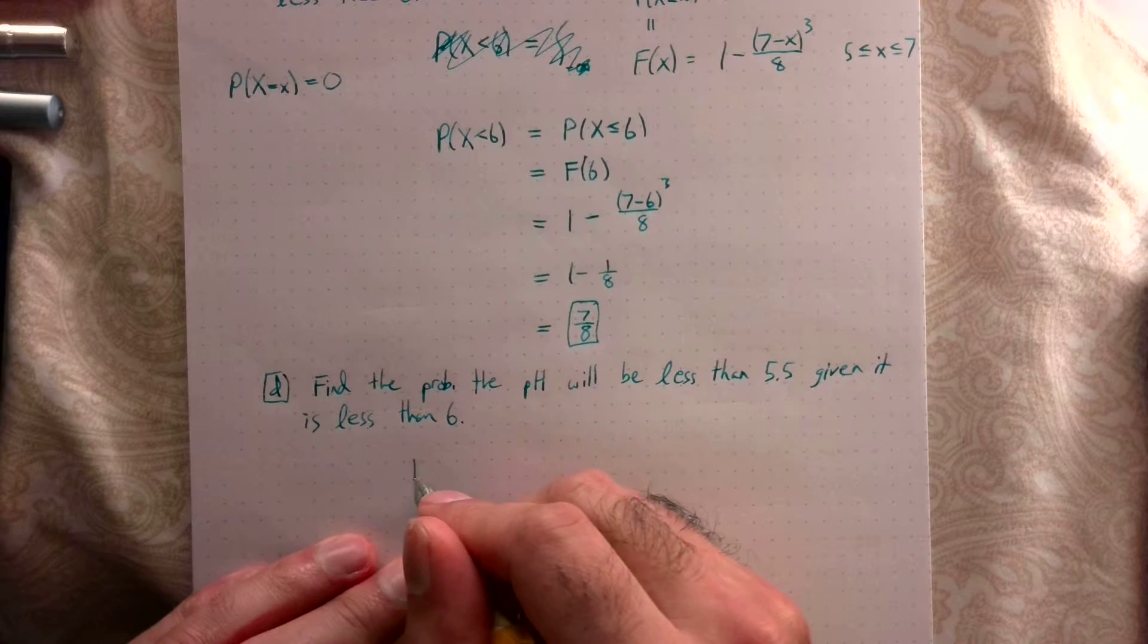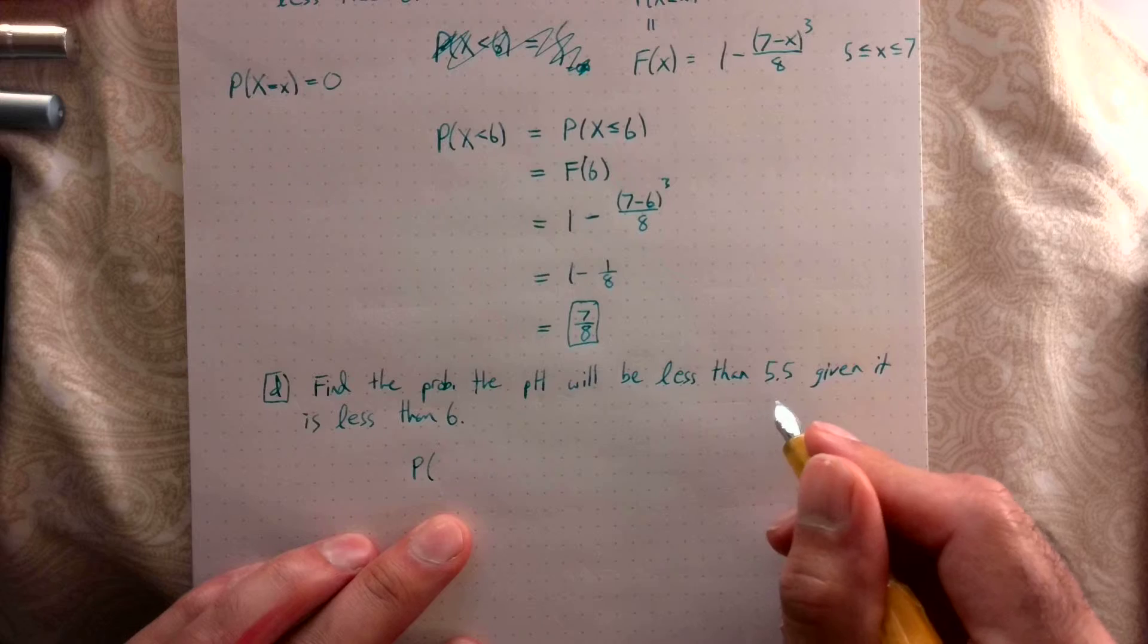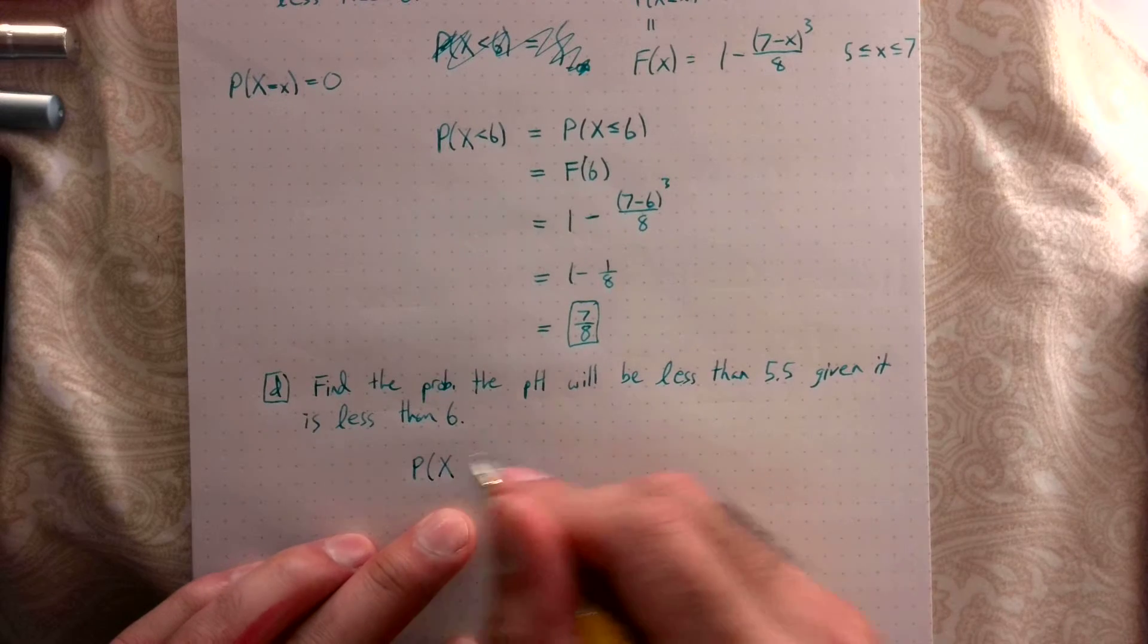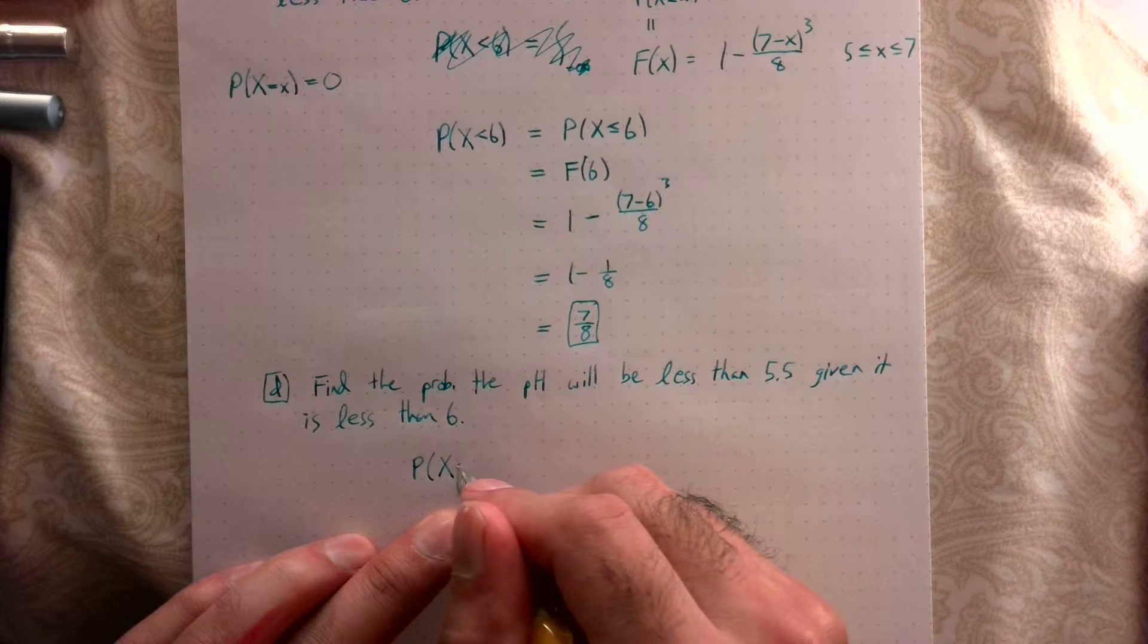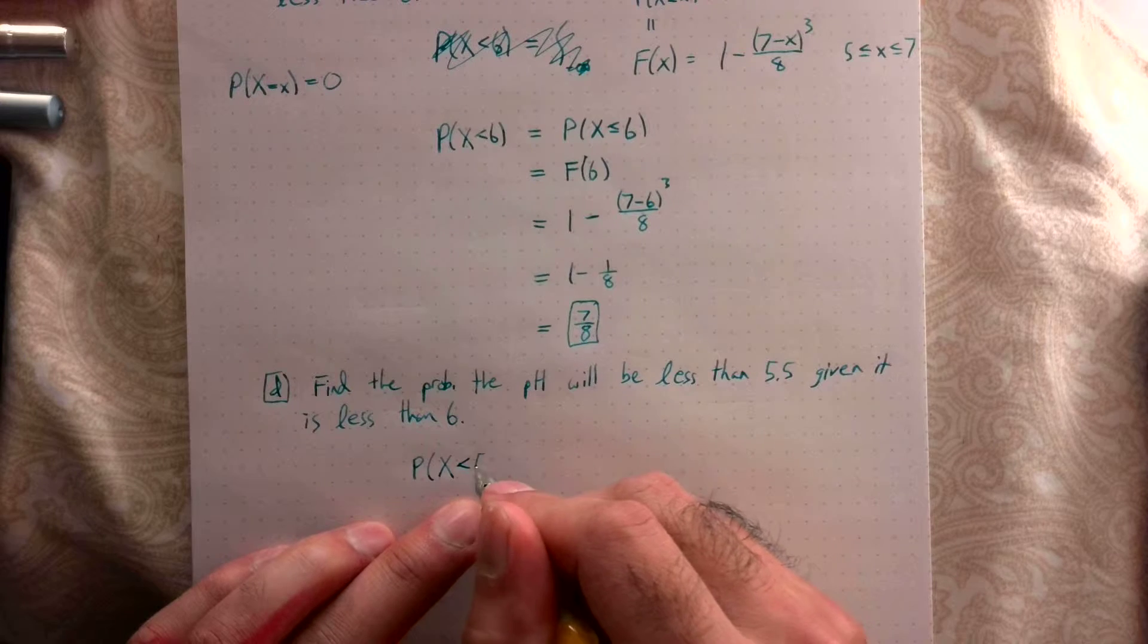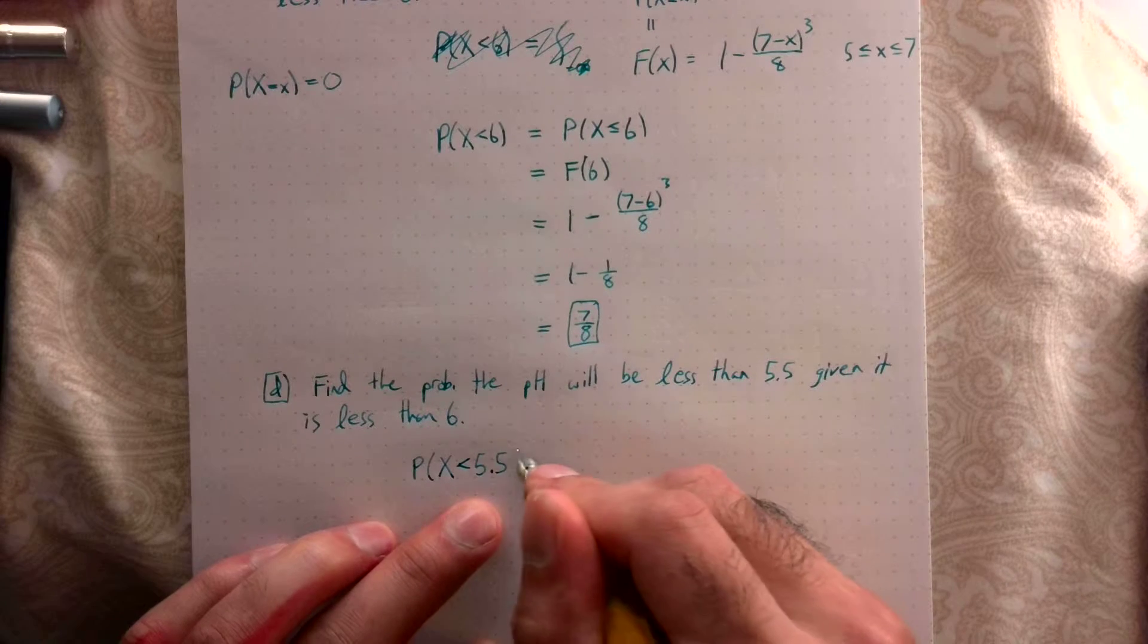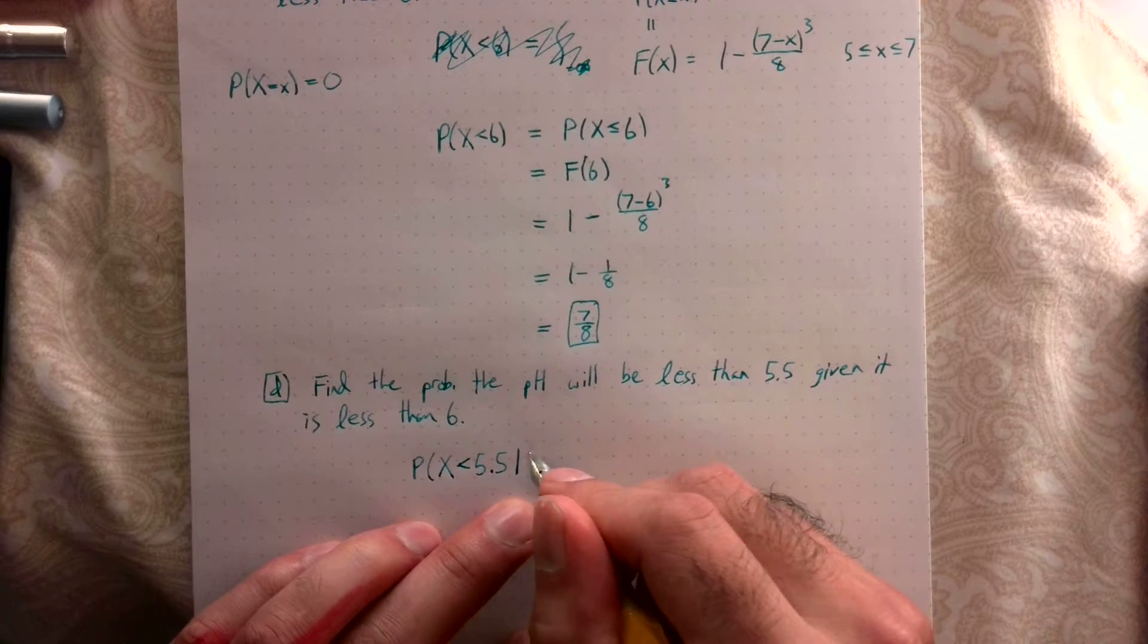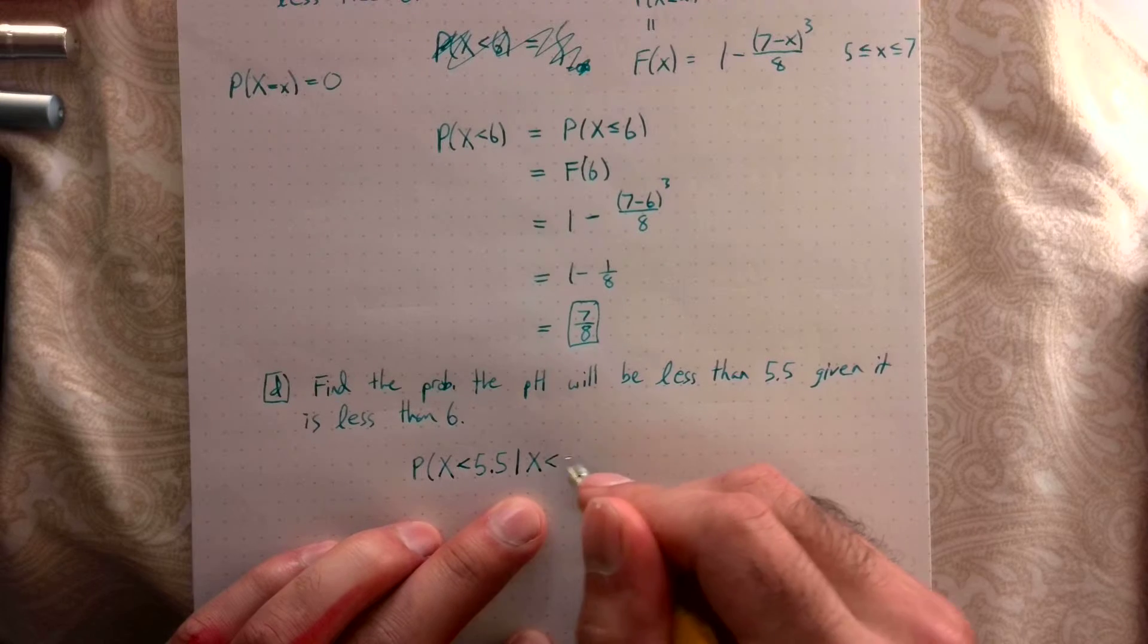So we're looking for the probability that our random variable X is less than 5.5, given that it is less than 6.